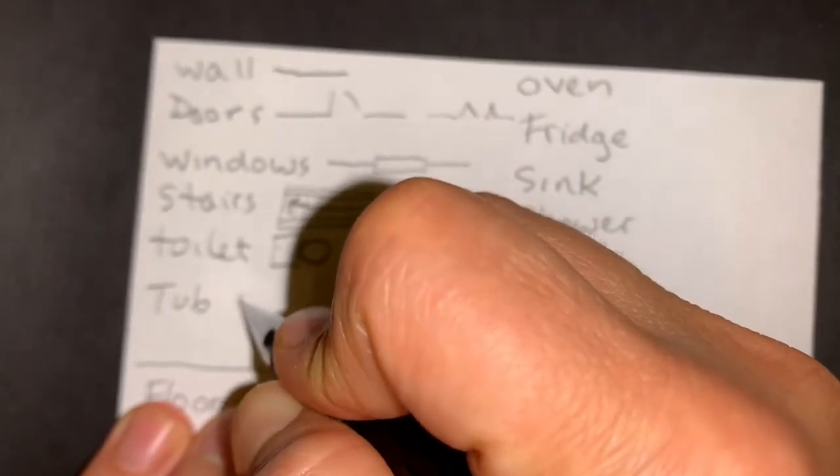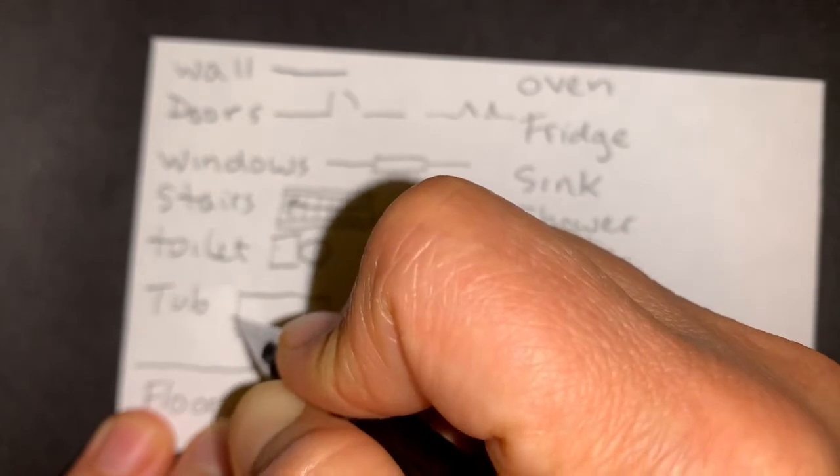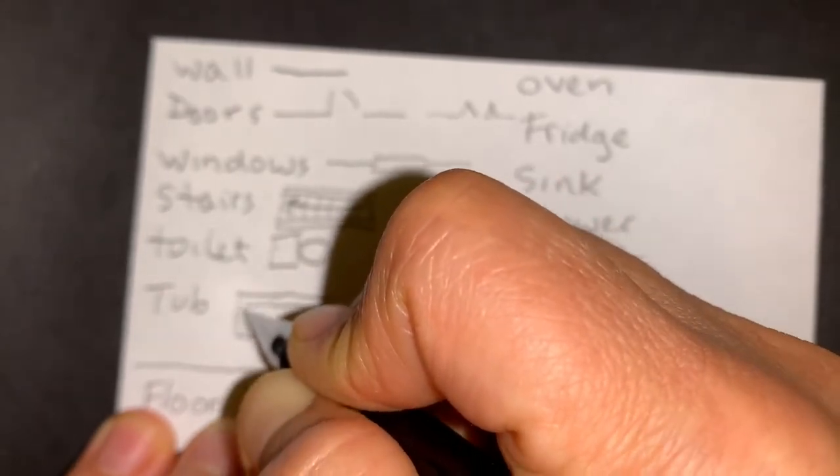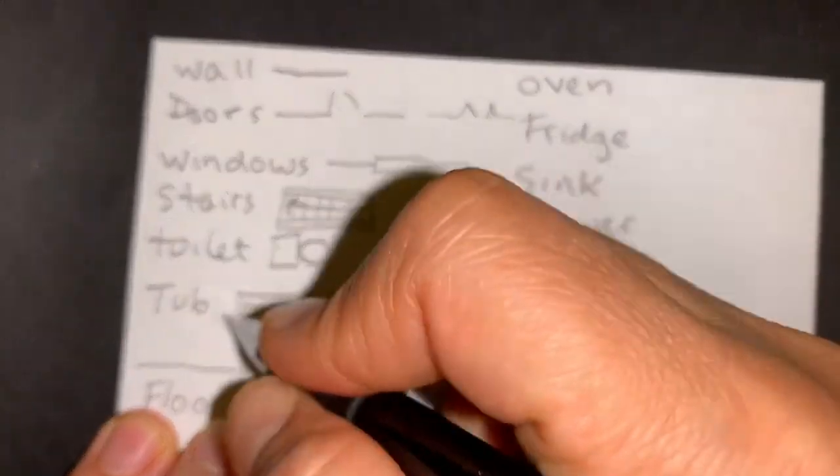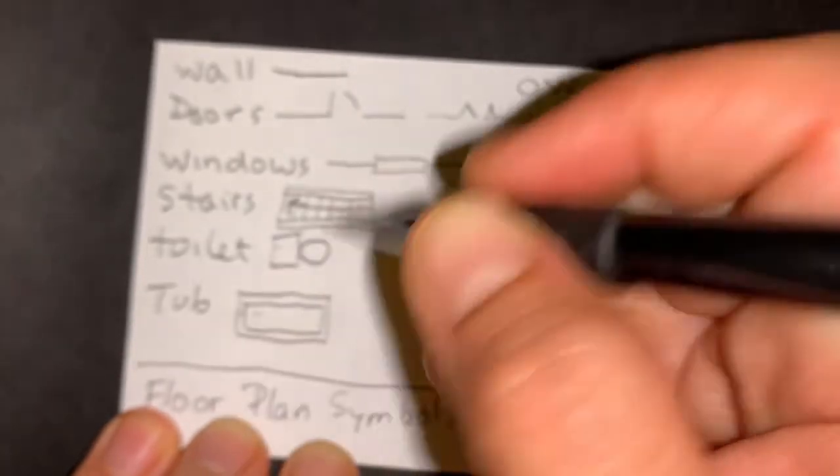A tub here, and then wherever the faucet is. You could also add the drain if you wanted to.